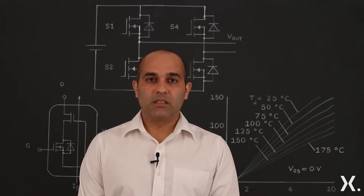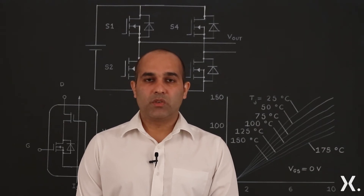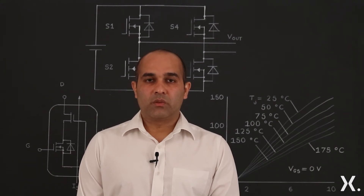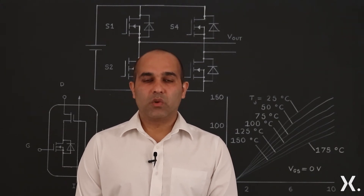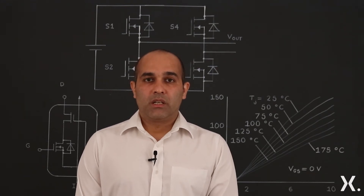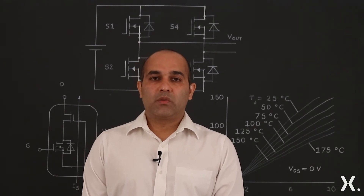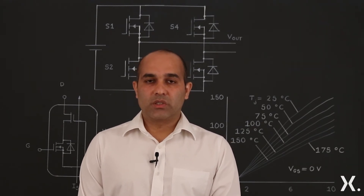Not only that, the recovery charge — which is the sum of static charge and stored charge — also goes high with high-voltage silicon MOSFETs. For example, for a typical 600 volt silicon superjunction MOSFET, the value of recovery charge is in the tens of microcoulombs. As a result, the body diode of a MOSFET is not an efficient solution for most applications.